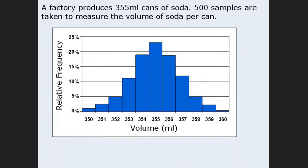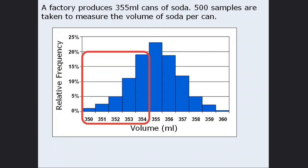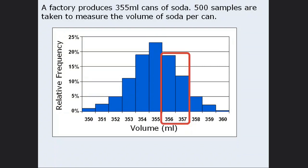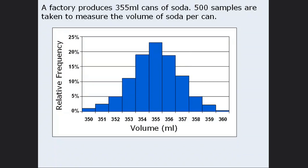The results are shown on a relative frequency histogram. The most common volume is 355 milliliters, which you might expect. However, sometimes more soda is poured and sometimes less is poured. It's more likely to have volumes close to 355 milliliters than volumes far from 355. This data looks a bit like a bell, and it's the bell shape that I want to discuss here.